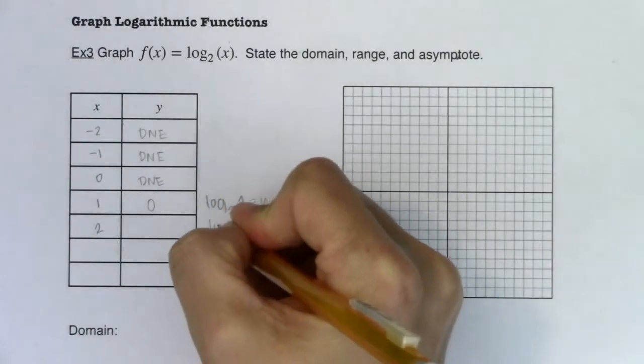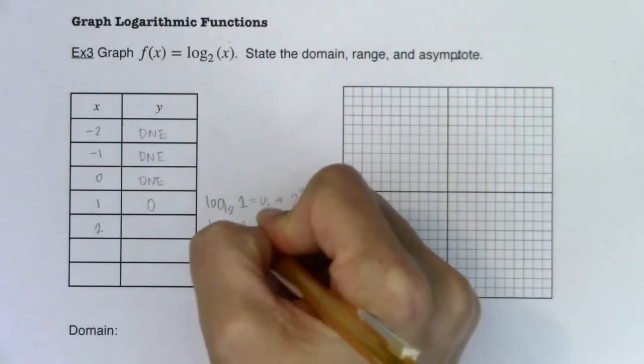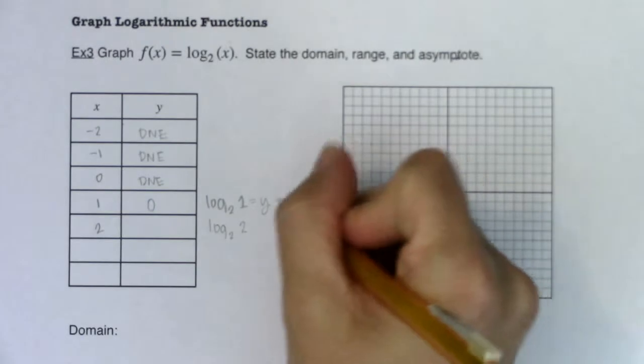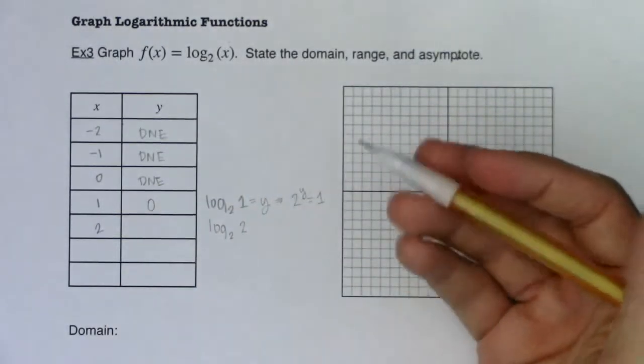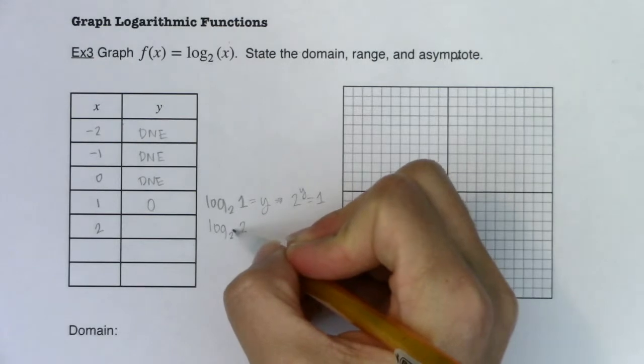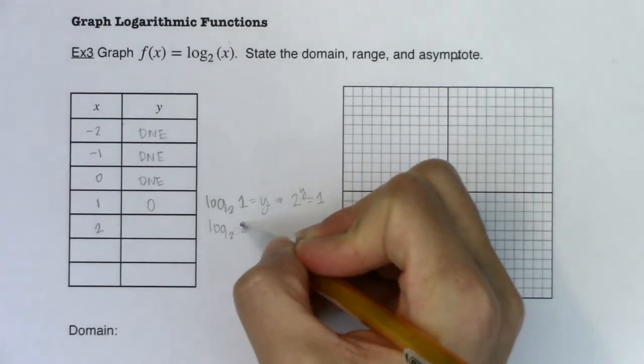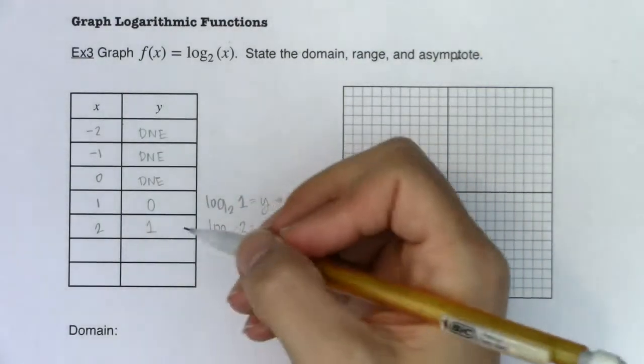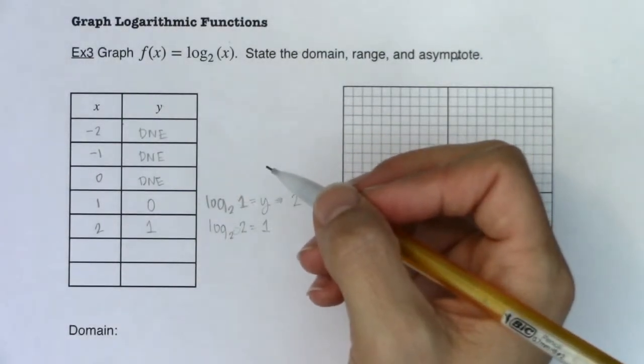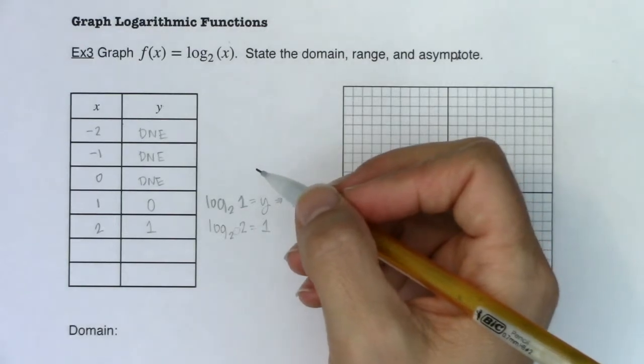Alright, let's take a look at log base 2 of 2. Again, you can take it and transfer it into its equivalent exponential equation, but I do want us to practice getting more comfortable with logarithms. What exponent do you need on two to get to two? Well, you just need one. Okay, so I have two ordered pairs. That's probably not enough for me to solve this.